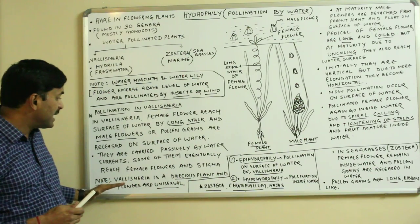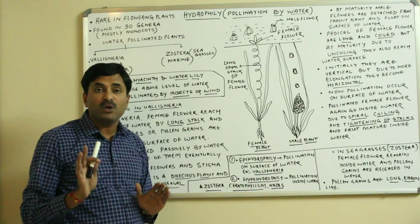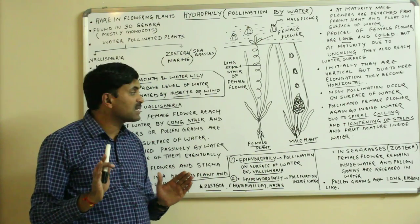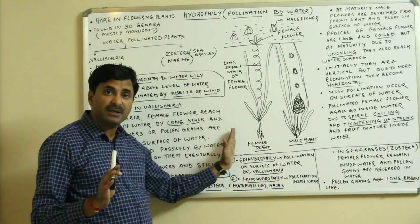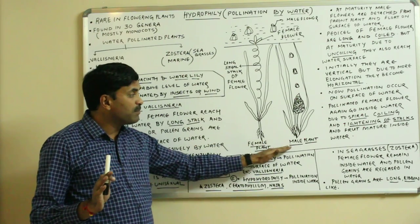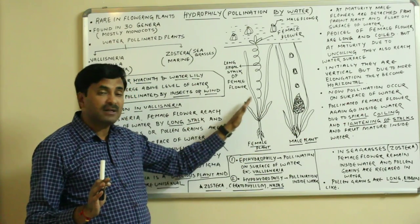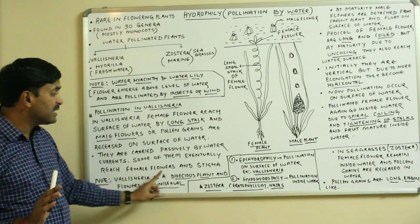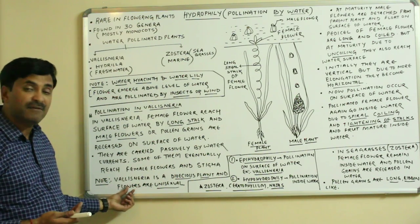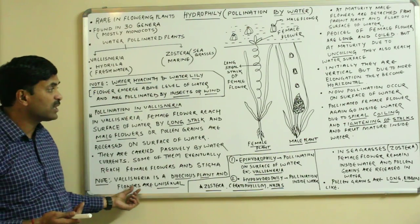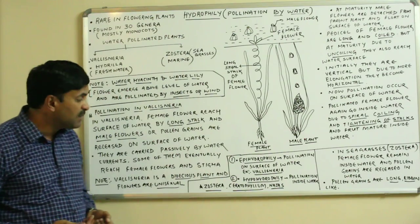Vallisneria is a dioecious plant — meaning the male and female plants are different. The male plant bears the male inflorescence and the female plant bears the female flower. Being dioecious, it naturally has unisexual flowers.